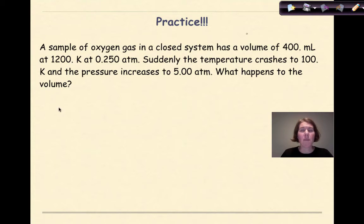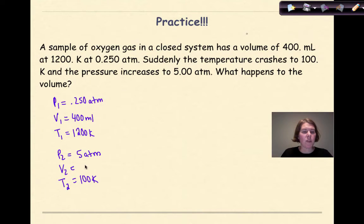So let's start out by listing out our variables. So P1, V1, T1, P2, V2, and then T2. Sample of oxygen gas in a closed system has a volume of 400 milliliters. There's my V1, so I'm going to list that first: 400 milliliters at 1200 K. So my temperature is 1200 K at 0.250 atmospheres. Suddenly the temperature crashes to 100 K. So my T2, wow that's a big drop in temperature. The pressure increases to 5 atmospheres, so my P2 is going to now be 5 atmospheres. What happens to the volume? So V2 is my x.